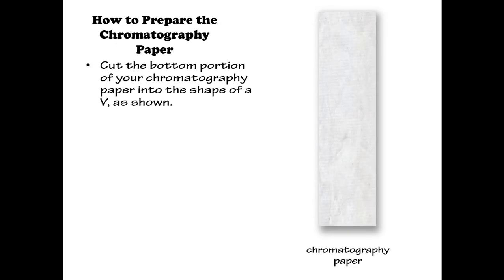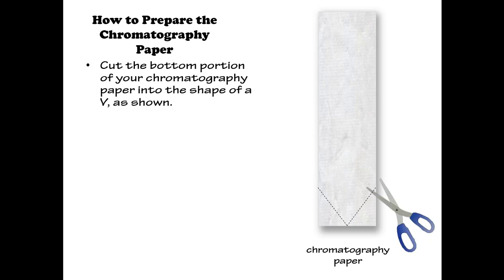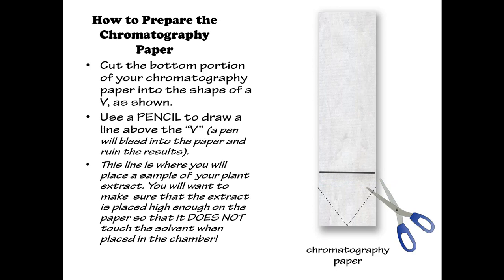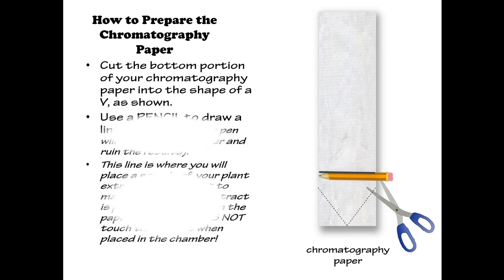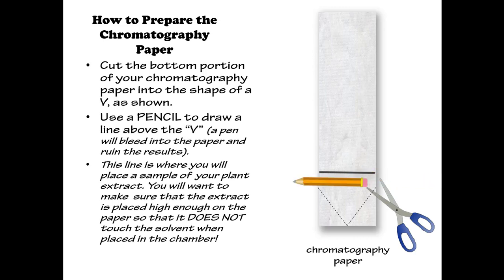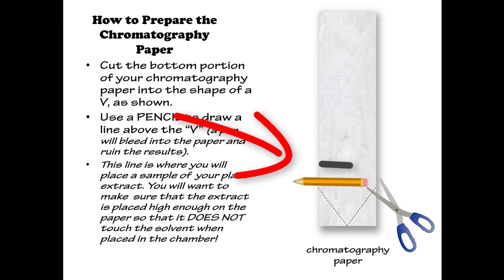Prepare your chromatography paper by cutting the bottom portion into the shape of a V. Next, use a pencil to draw a line above the V — don't use a pen because a pen will bleed into the paper and ruin your results. This line is where you will place your sample of plant extract. Make sure the extract is placed high enough on the paper so that it does not touch the solvent when placed in the chamber.